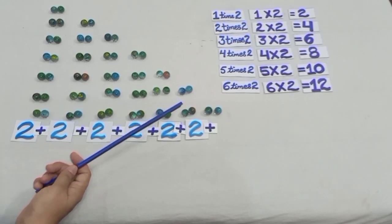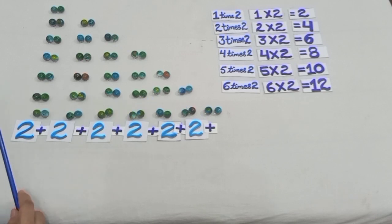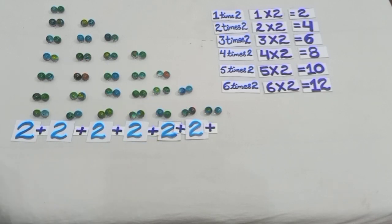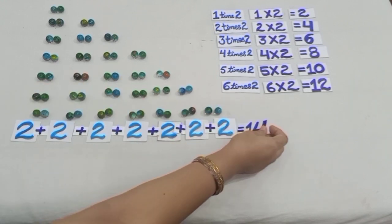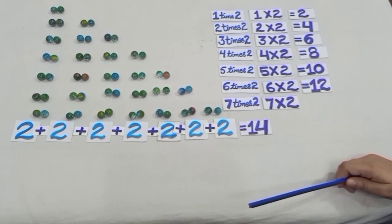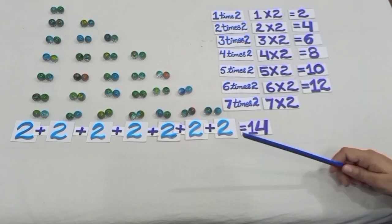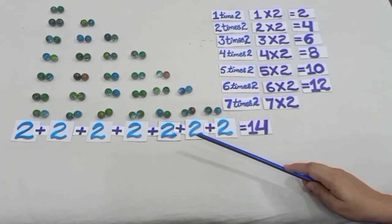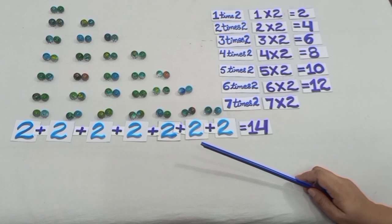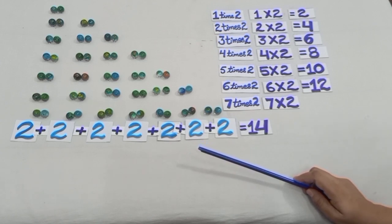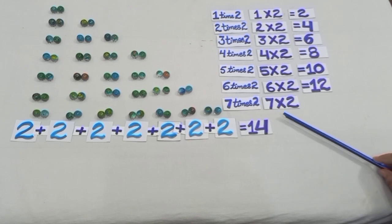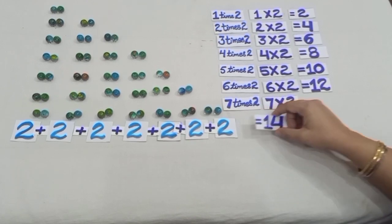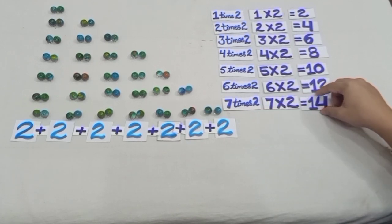Earlier we had 12 marbles and now 2 marbles more, so we have 14 marbles. You can see we have 7 groups with 2 marbles in each group. That means 7 times 2, and we write it as 7 into 2, which is equal to 14.